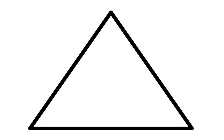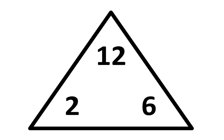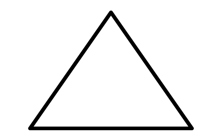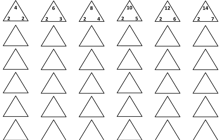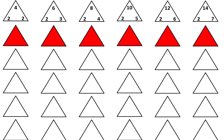In the next triangle, write 2 times 6 is equal to 12. In the next triangle, write 2 times 7 is equal to 14. And that completes the top row.